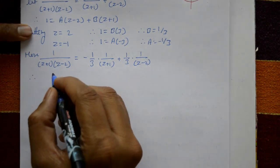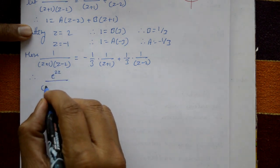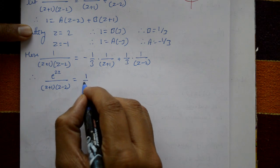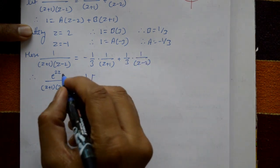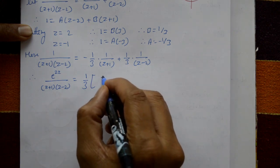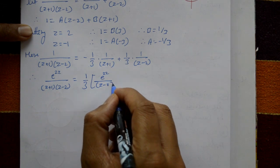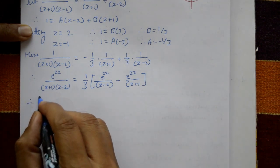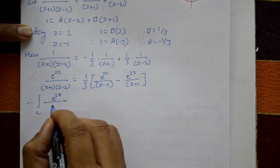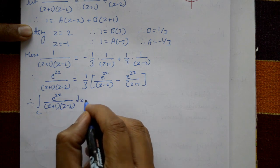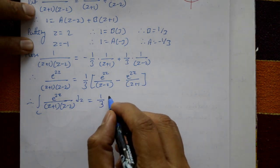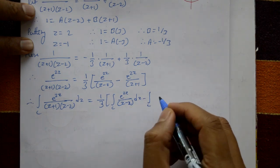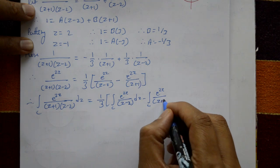Therefore, e^(2z) over (z+1)(z-2) equals (1/3) times [e^(2z)/(z-2) minus e^(2z)/(z+1)]. Taking integration of C: integral of e^(2z)/[(z+1)(z-2)] dz equals (1/3) times [integral of C of e^(2z)/(z-2) dz minus integral of C of e^(2z)/(z+1) dz]. Call this equation number one.